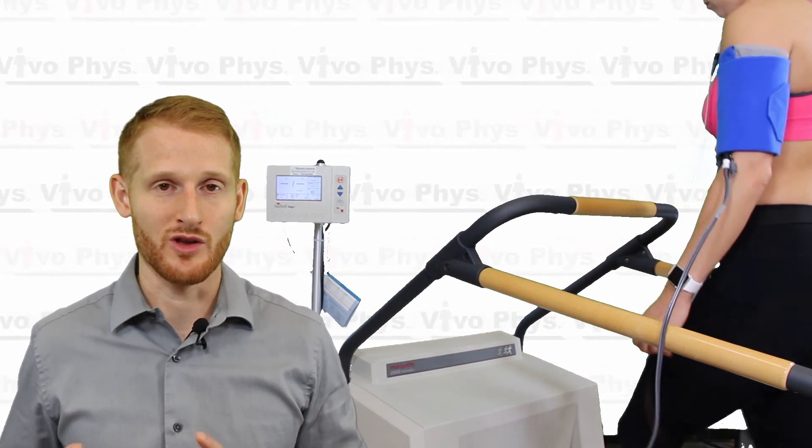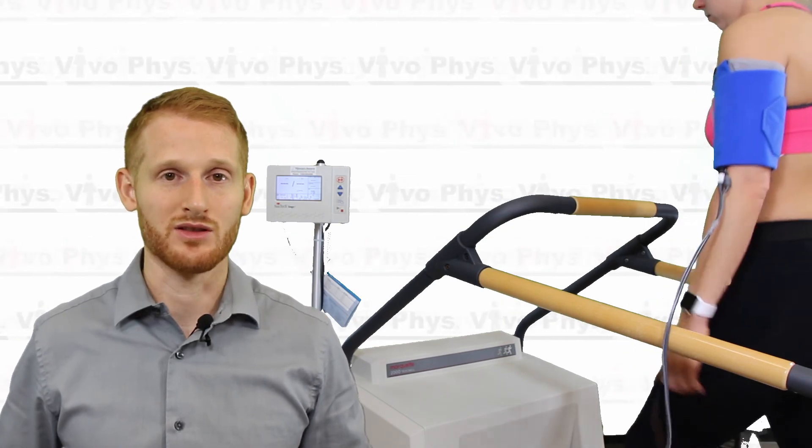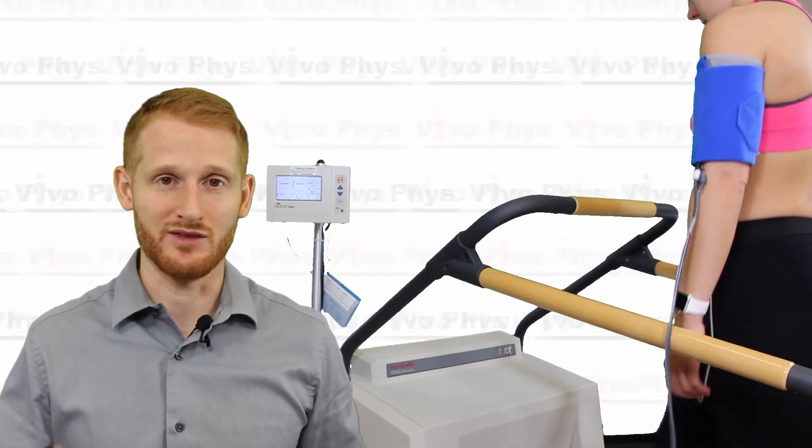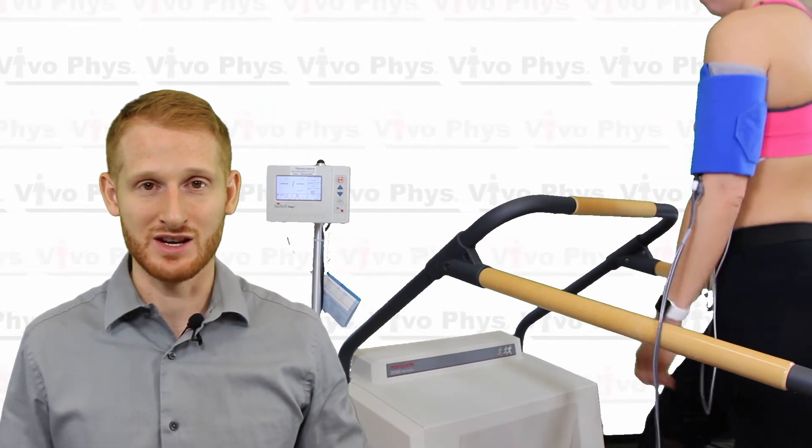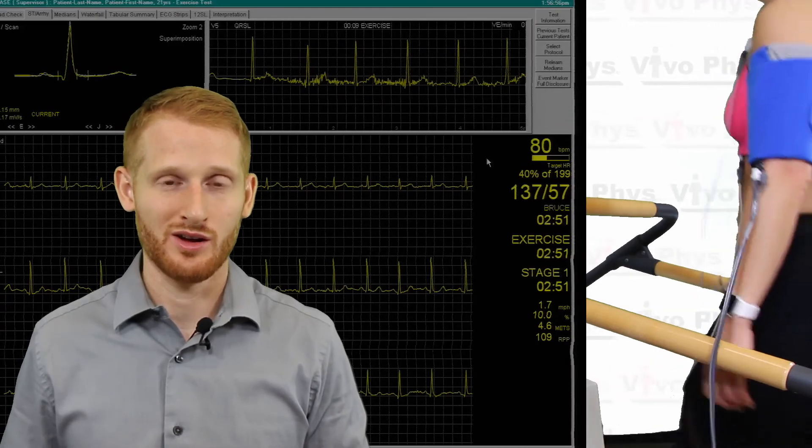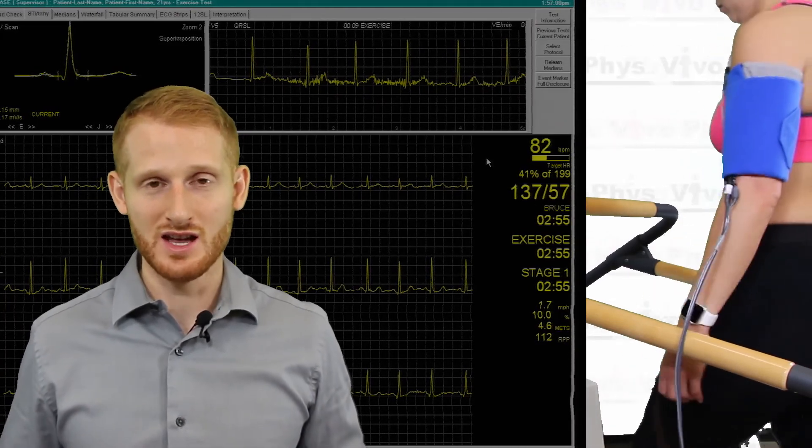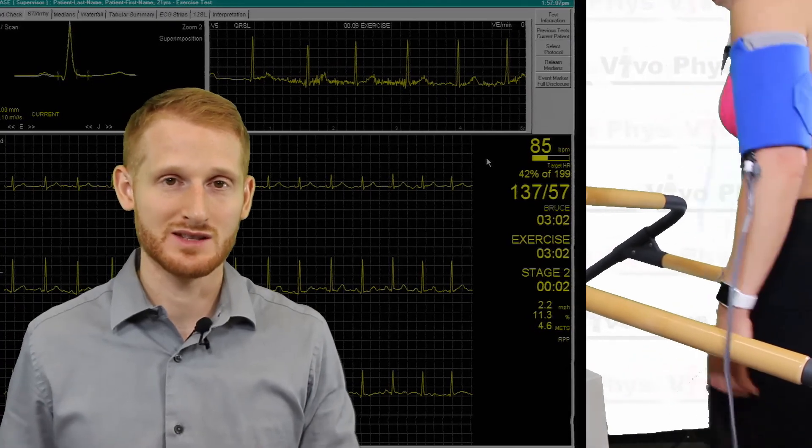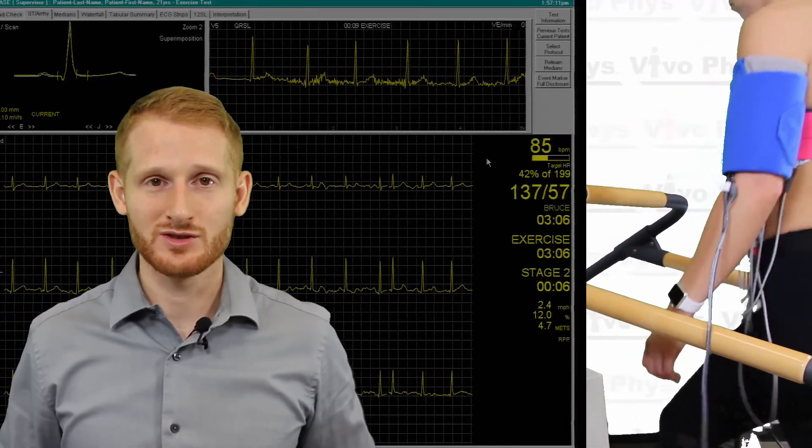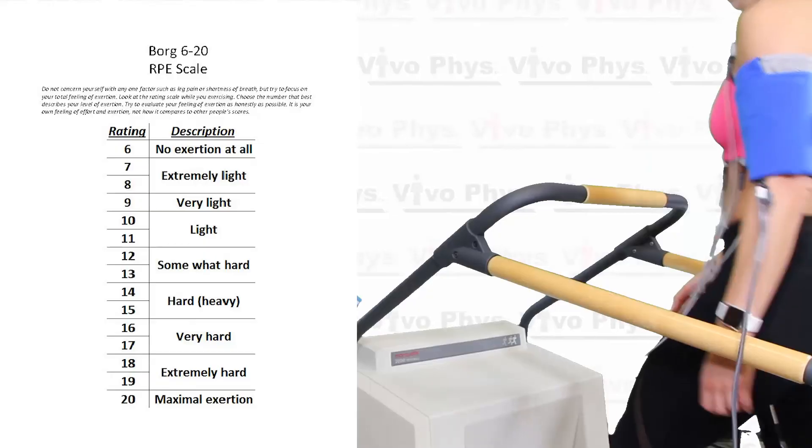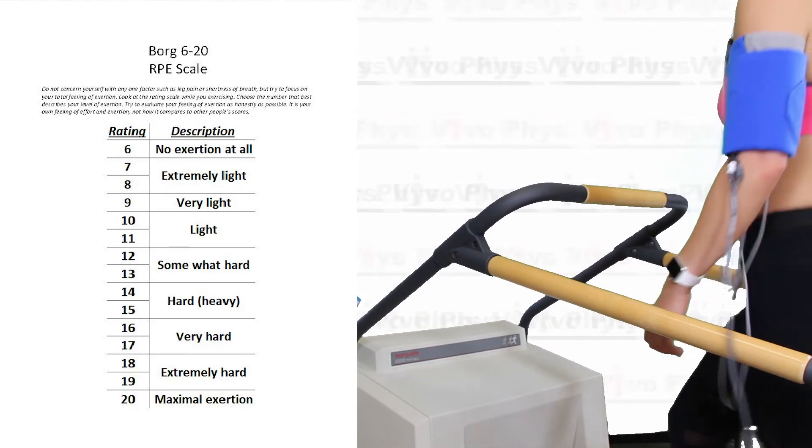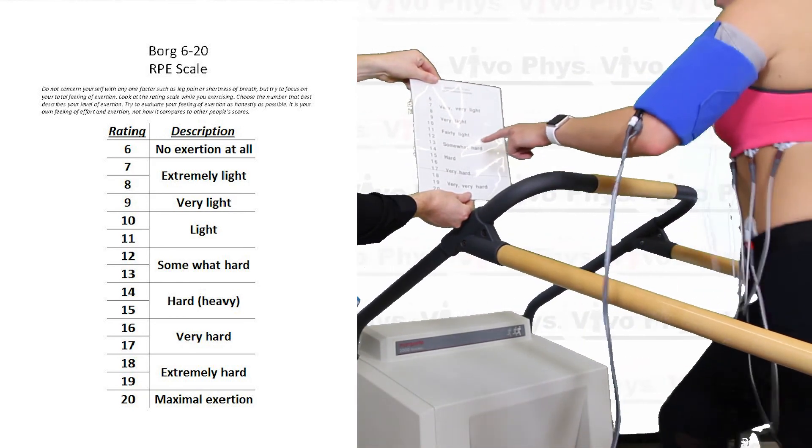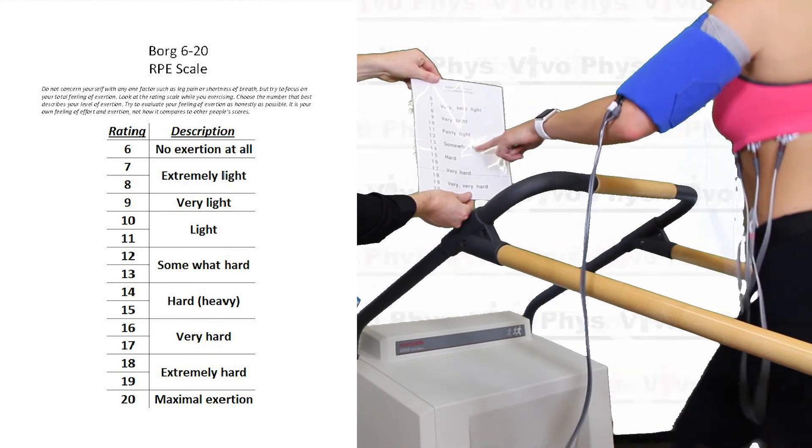This system is set to run the protocol essentially on its own. So every three minutes, the Bruce protocol gets faster and steeper. You're going to see the treadmill going up in grade and getting faster. It does that all automatically because the treadmill is integrated into the software. It also should print off a 10 second 12-lead ECG at the end of every stage. So you're going to see about five seconds before it switches to the next stage, it starts to print and it continues printing for five seconds after it switches. Some other things you're probably going to want to record would be the RPE or ratings of perceived exertion, and you're going to want to get that somewhere around this end of stage period as well.